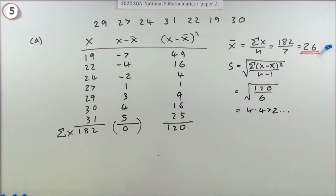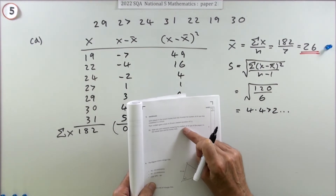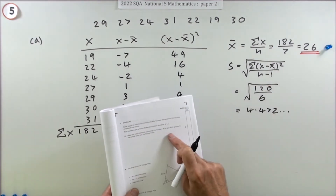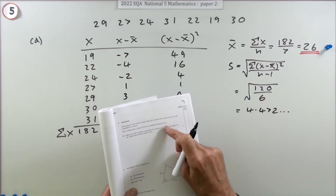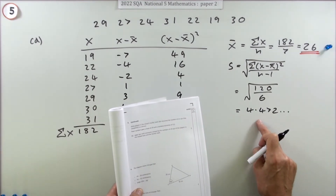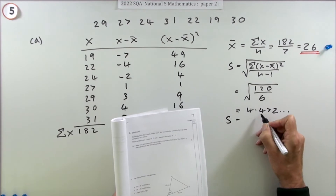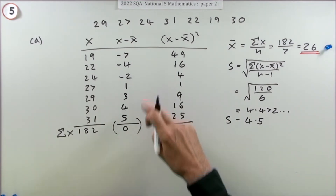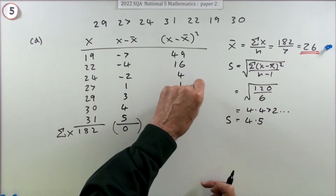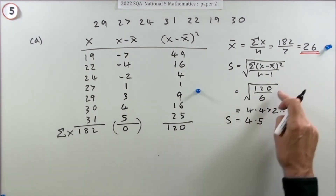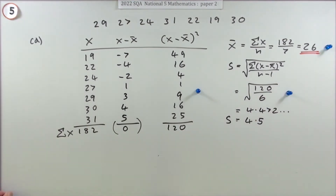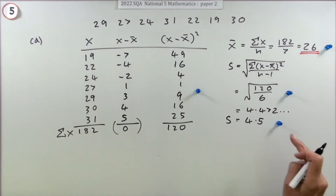The square root of 120 over 6 comes to 2√5, which is 4.472... Now looking ahead at part B, the other team's standard deviation is 3.2, so I'll round to one decimal place: 4.5. The three marks here were for: getting the squared differences column, using the formula correctly with the total over n minus one, and the final answer.